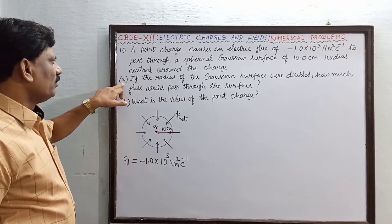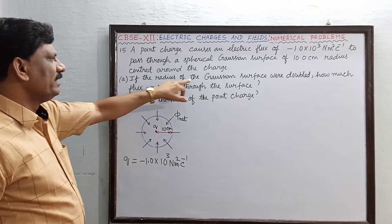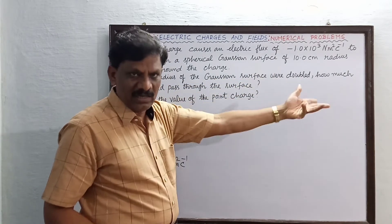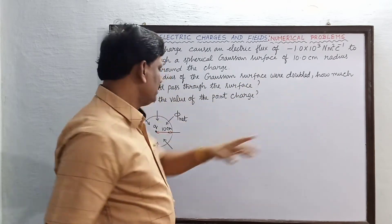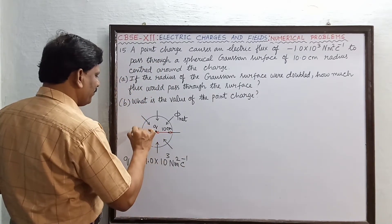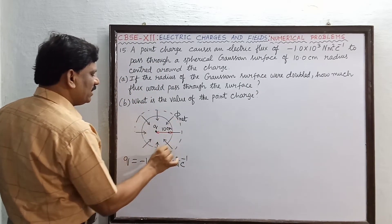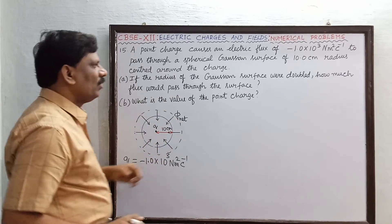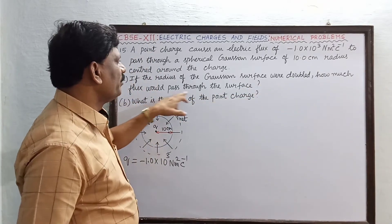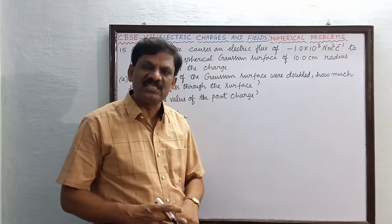Now subdivision A: if the radius of the Gaussian surface were doubled — instead of 10 centimeters, if it is doubled to 20 centimeters — what flux would pass through the surface?